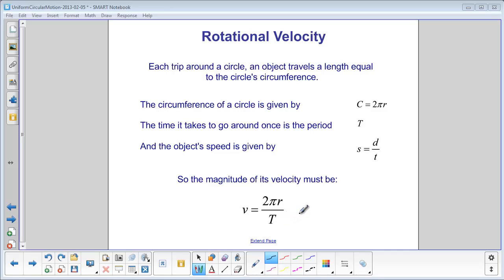which is the period. So the magnitude of the velocity, which is the speed, is equal to 2πr divided by the period.